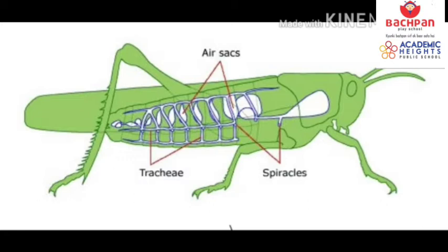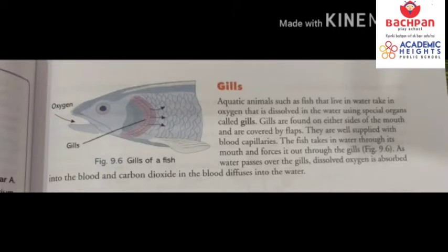During respiration, oxygen-rich air enters through spiracles and reaches cells passing through the trachea. Carbon dioxide diffuses from the tissues into the trachea and is then passed out through the body through the spiracles.